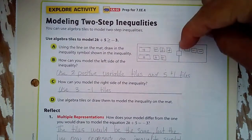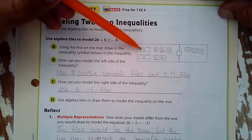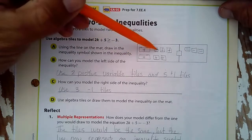How do you solve a two-step inequality? We're going to start with our algebra tiles and model this: 2k. So 2k, each of these is a k, plus 5. One, two, three, four, five.